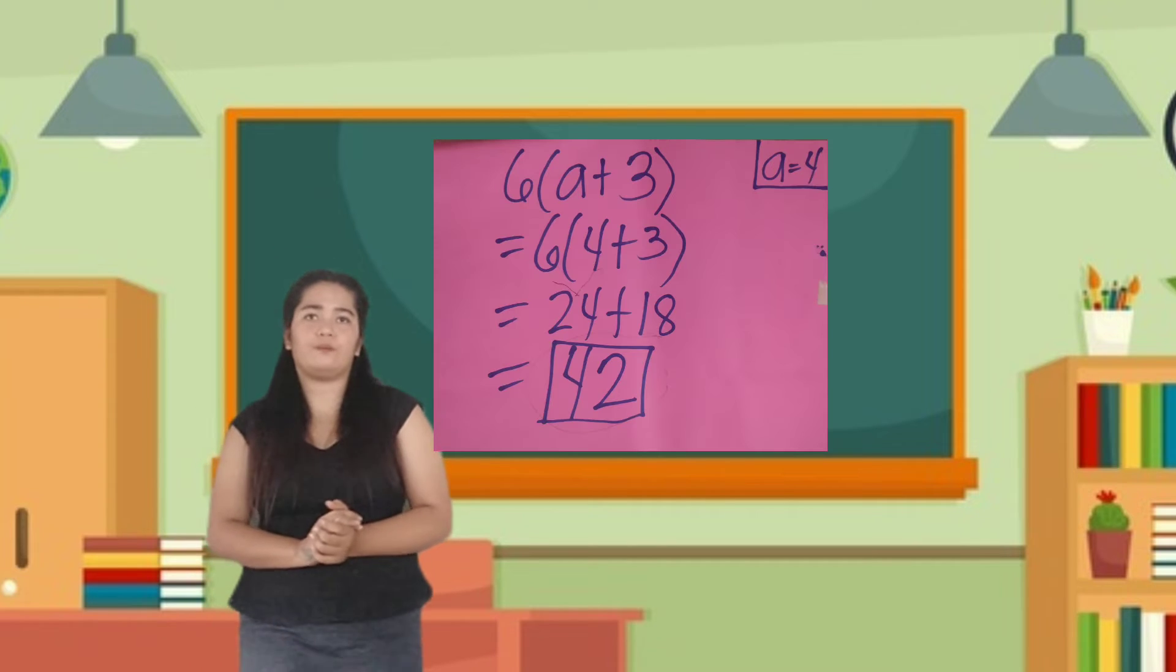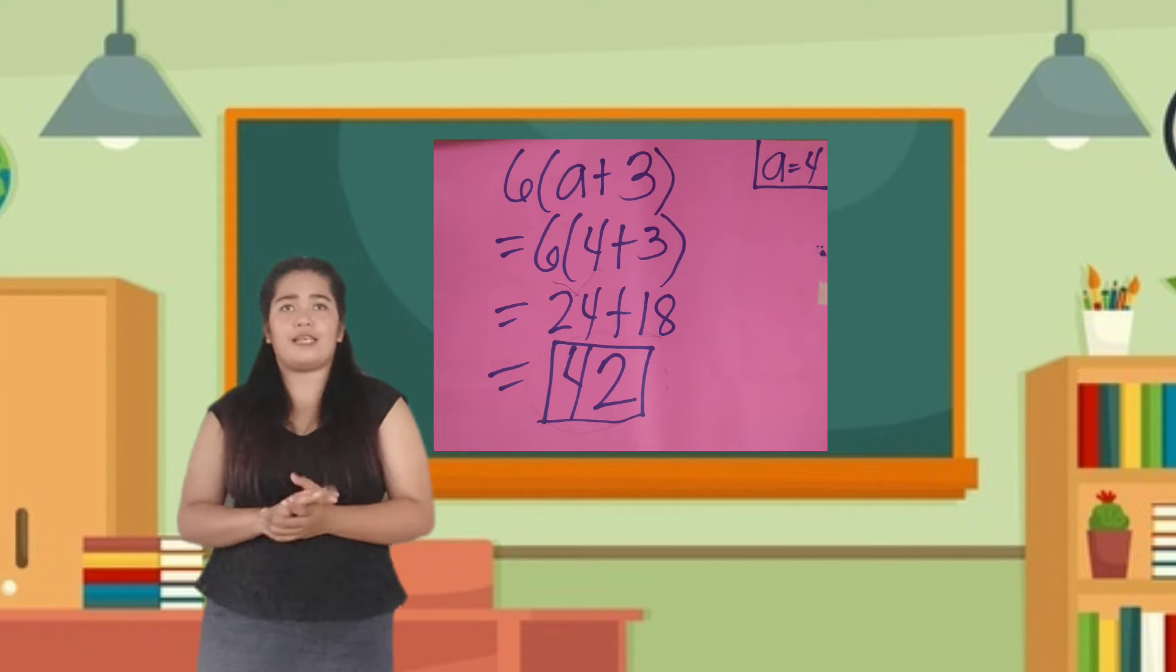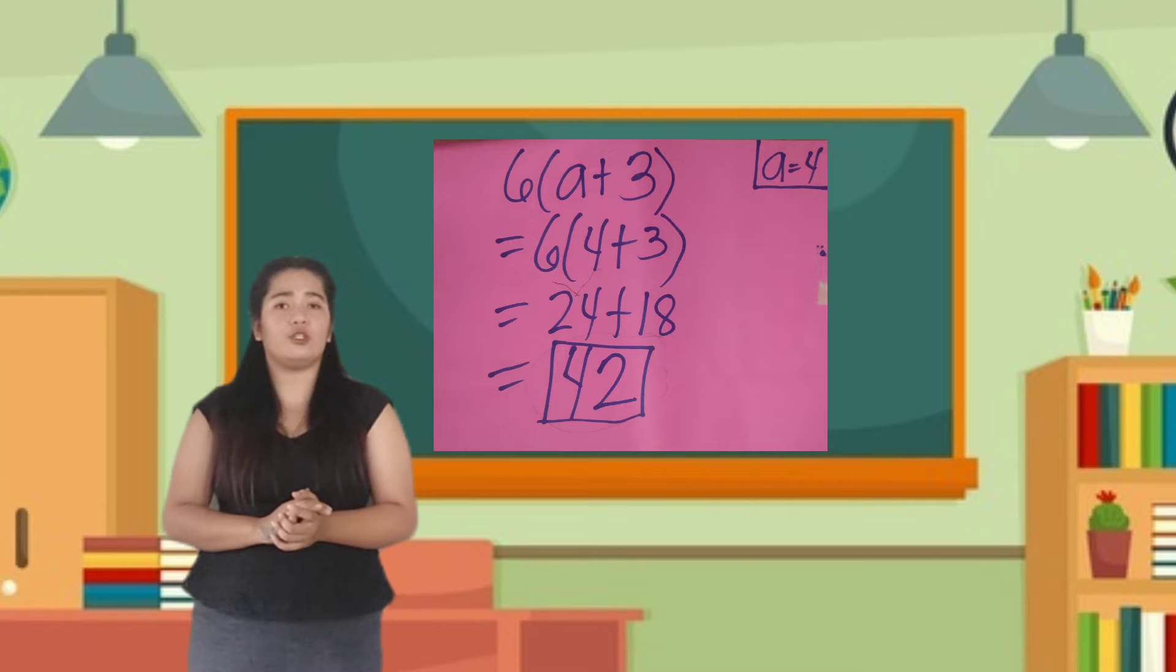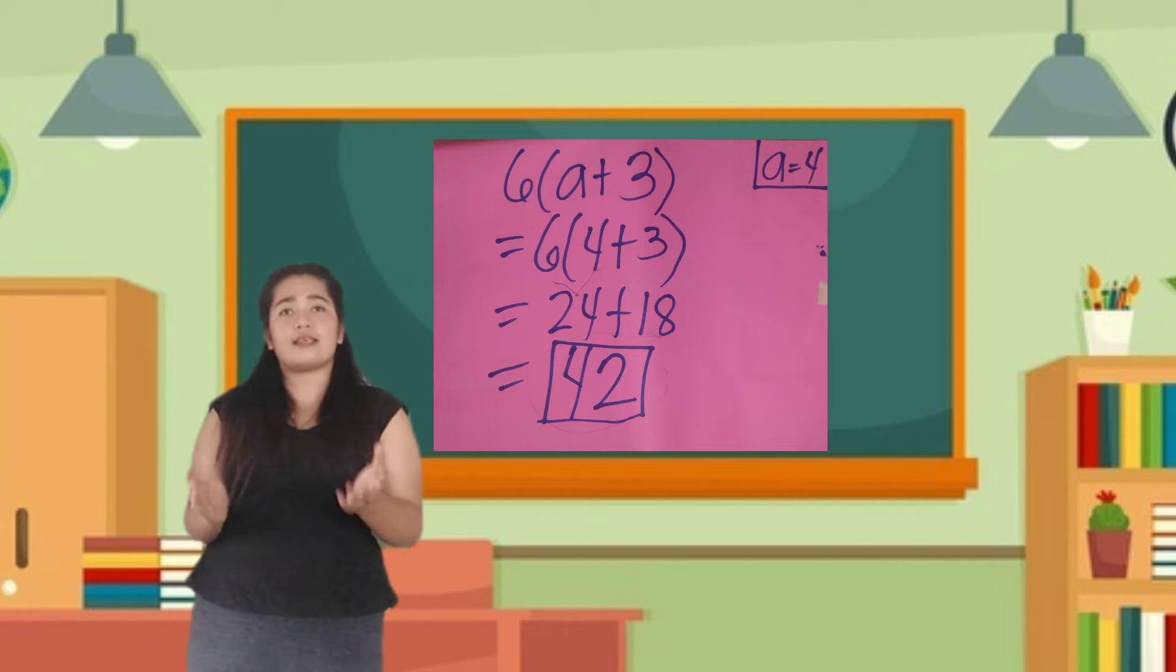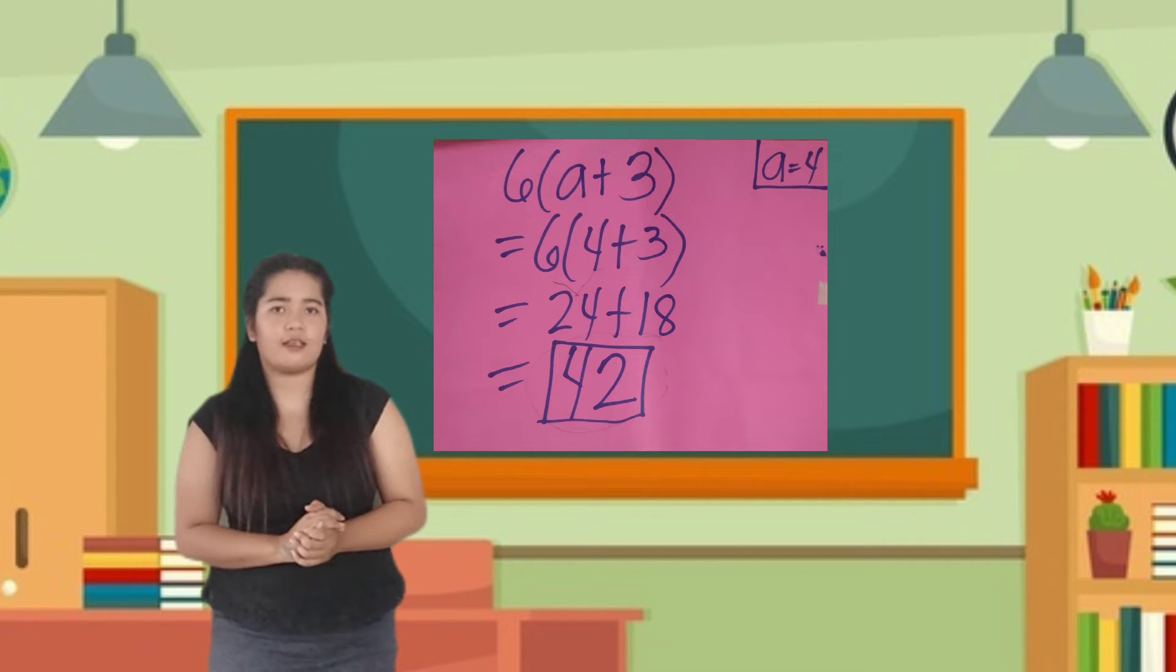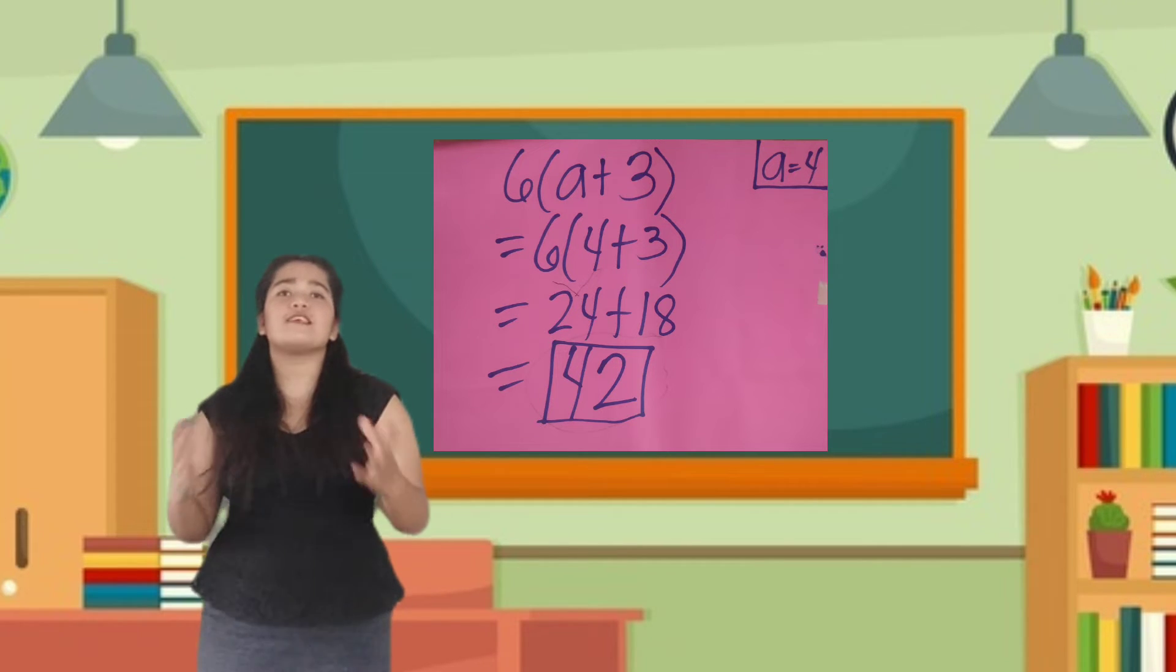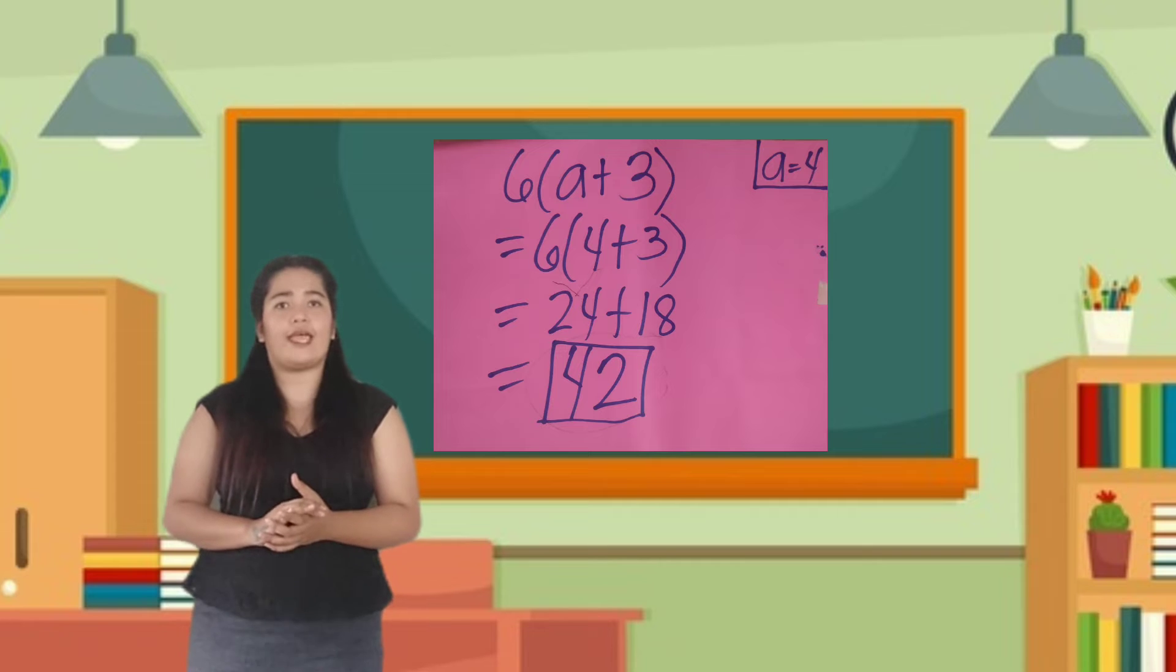Number two. 6A plus 3 where A is equal to 4. So, substitute A into 4. 6 times 4 plus 3. So, multiply 6 times 4 is equal to 24. 6 times 3 is equal to 18. So, 24 plus 18 is equal to 42.